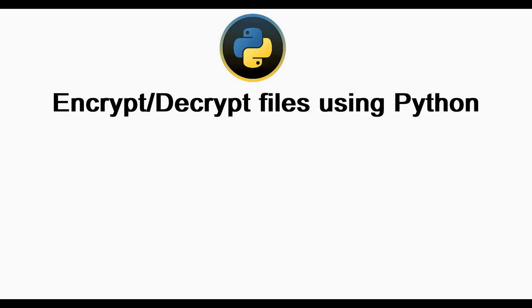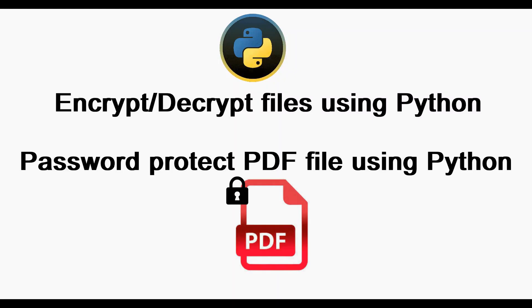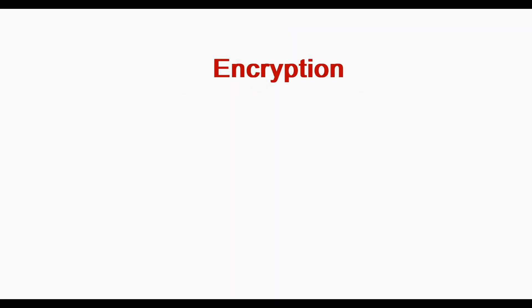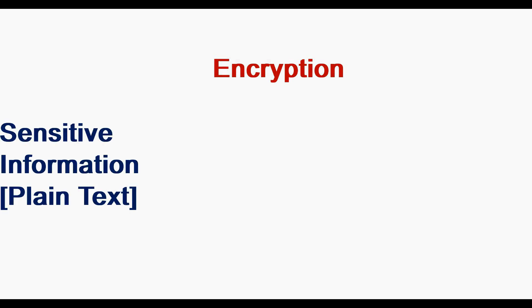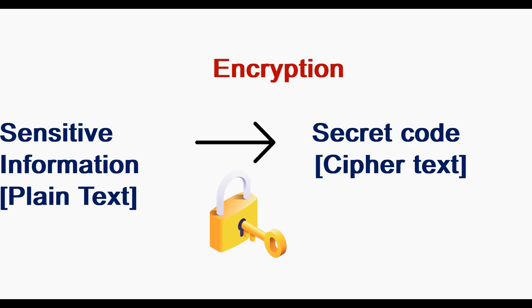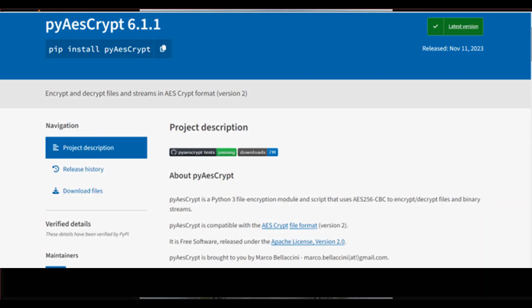Hello all, welcome back. This is Christopher Dana from Trinity Software. In this video, let us see how to encrypt and decrypt any kind of file using Python, and also how to password protect a PDF file using Python. First of all, what is encryption? Encryption is used to protect sensitive information — that sensitive information can be converted into a secret code so that the information's true meaning will be hidden.